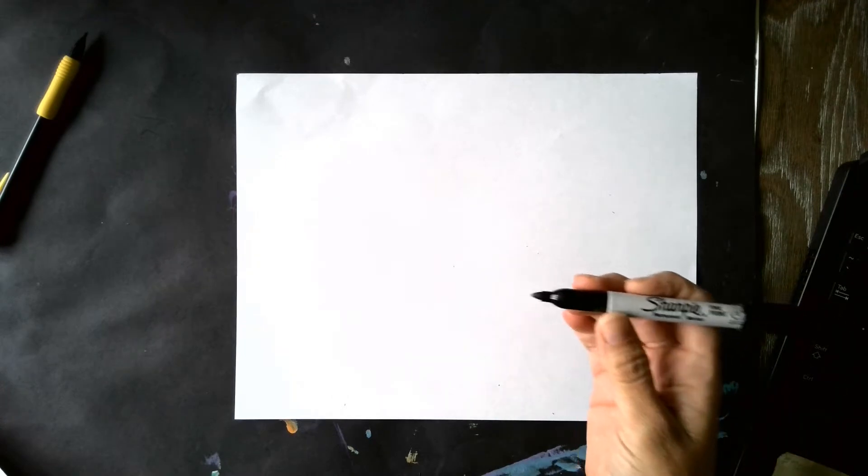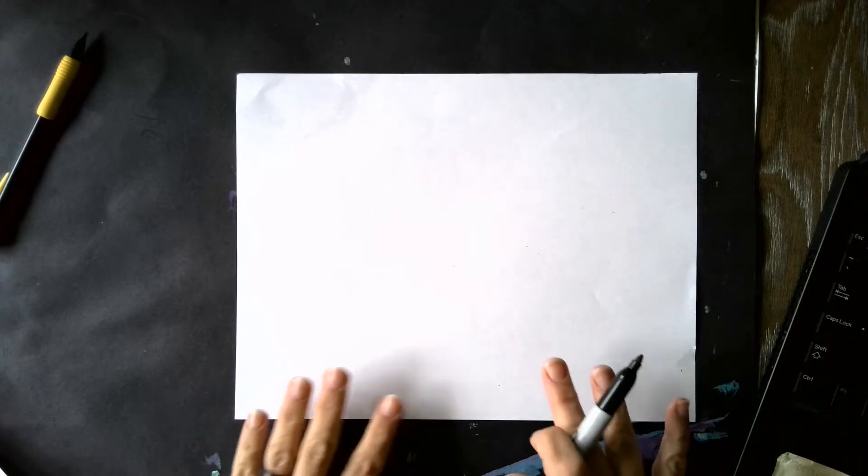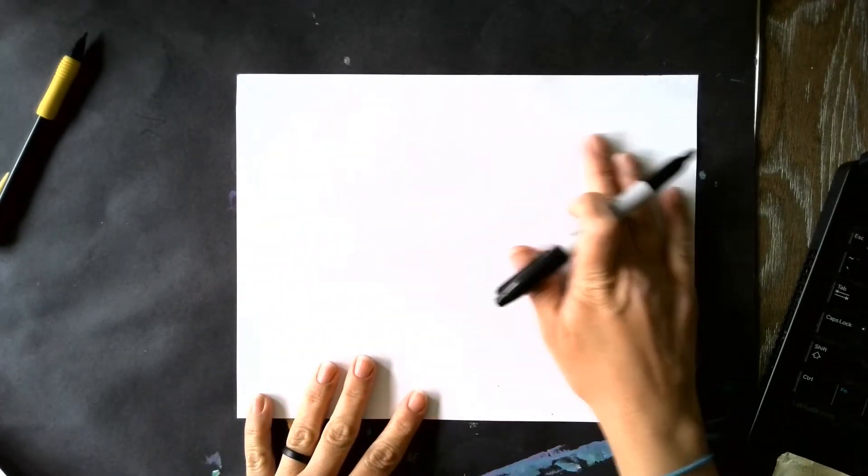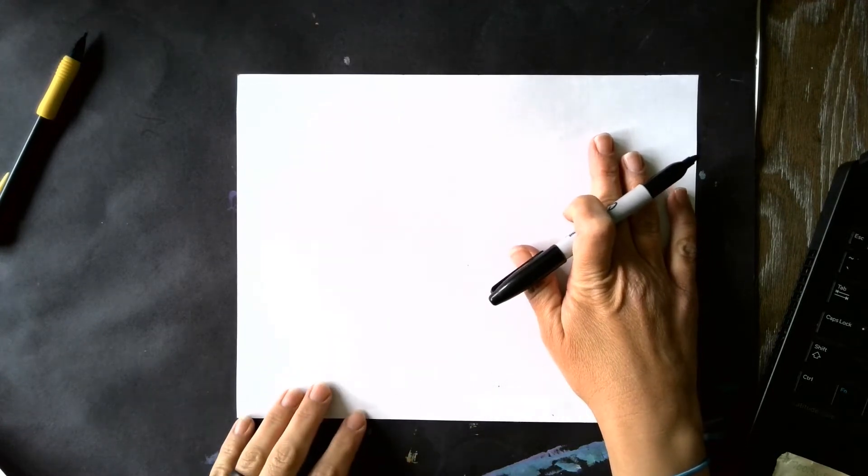If I were you, I would maybe start with a pencil so that you can erase anything. But I'm going to start with a Sharpie just so you can see what I'm drawing. I think if I use a pencil it will be too light. So what I'm going to do is turn my paper horizontally like this and I'm going to start with the head.